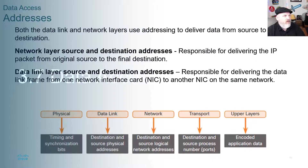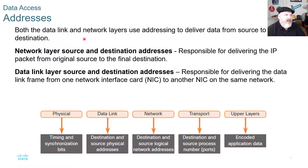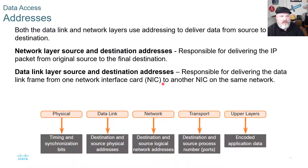Data access and addresses. Both the data link and network layers use addressing to deliver data from source to destination. The network layer source and destination addresses are responsible for delivering the IP packet from original source to final destination. The data link source and destination addresses are responsible for delivering the data link frame from one network interface card to another network interface card. This is where we do our switching, staying on the same local area network, versus where routing and IP addressing send traffic further.